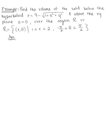We're looking for the volume of the solid below the hyperboloid defined by z = 9 minus the square root of 1 plus x squared plus y squared, and above the xy-plane defined by z = 0, over the region R defined by all points (r, θ) where r is between 1 and 2, and θ is between negative π/2 and π/2.